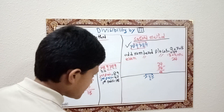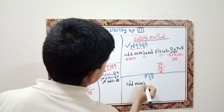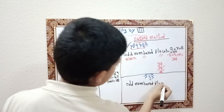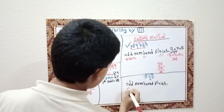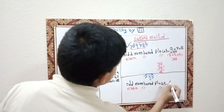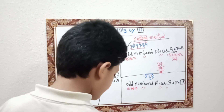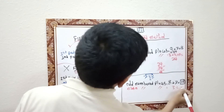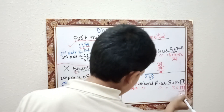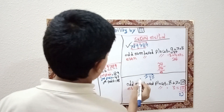Now for a new example. Odd-numbered places: 8 plus 7 equals 15. Even-numbered places: 3, which equals 3. Subtracting: 15 minus 3 equals 12. Can 12 be divisible by 11? No. So this number cannot be divisible by 11.